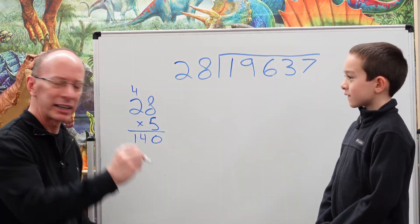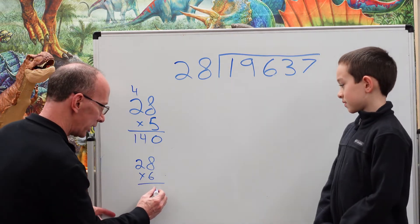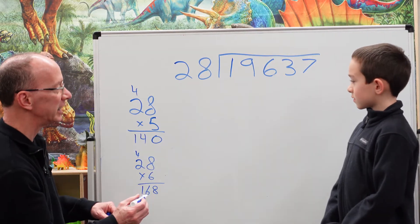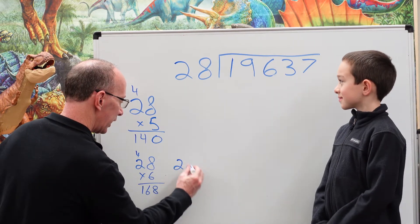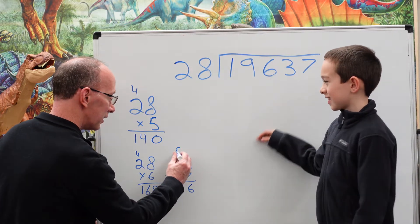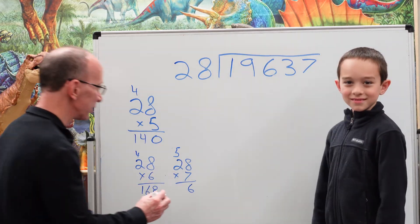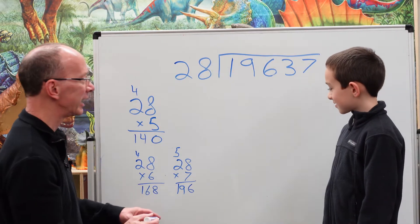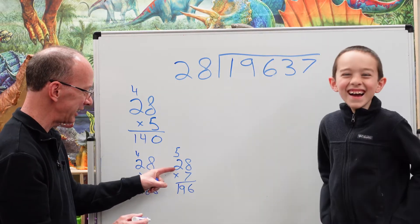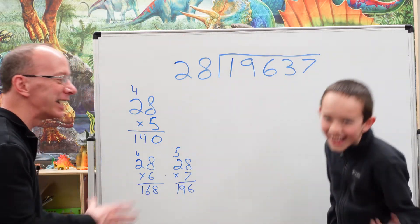I think we might be able to get another number in there. 28 times six: eight times six is 48, six times two is 12, plus the four, which would be 168. Let's try one more. 28 times seven: eight times seven is 56, put the zero, seven times two is 14, plus the five is 196. Bingo! He hit it right on the nose. Nice job!